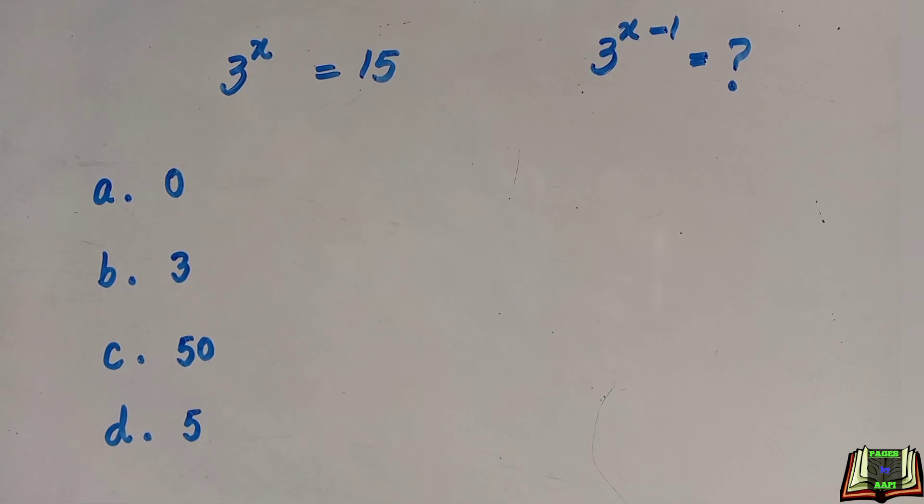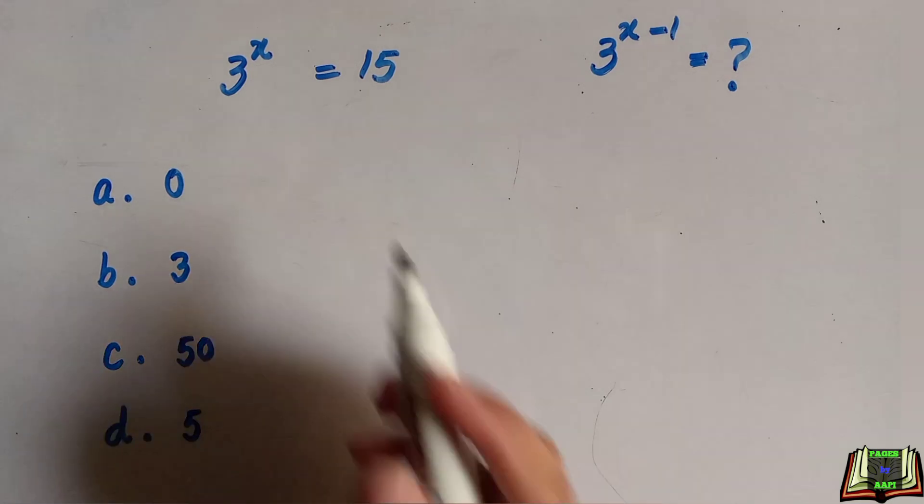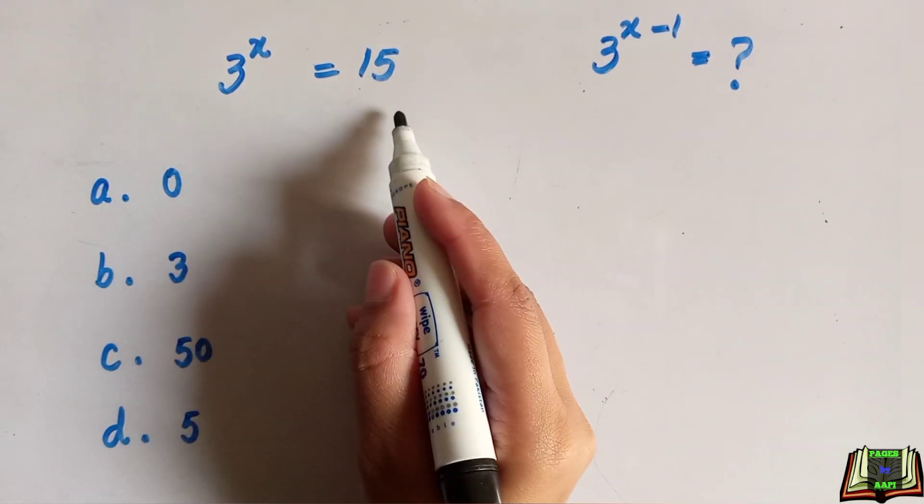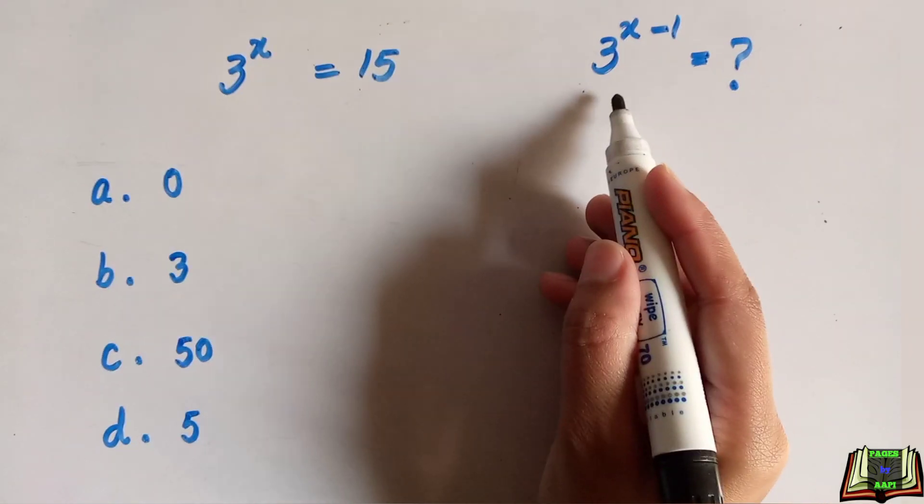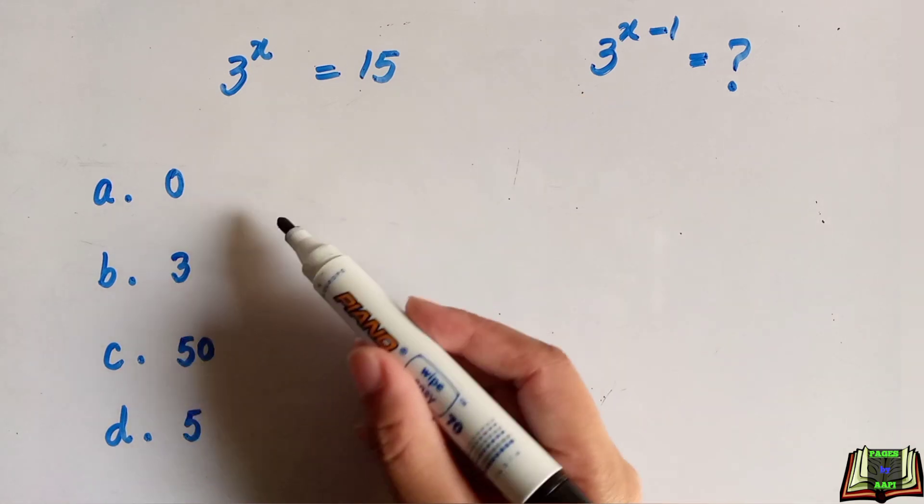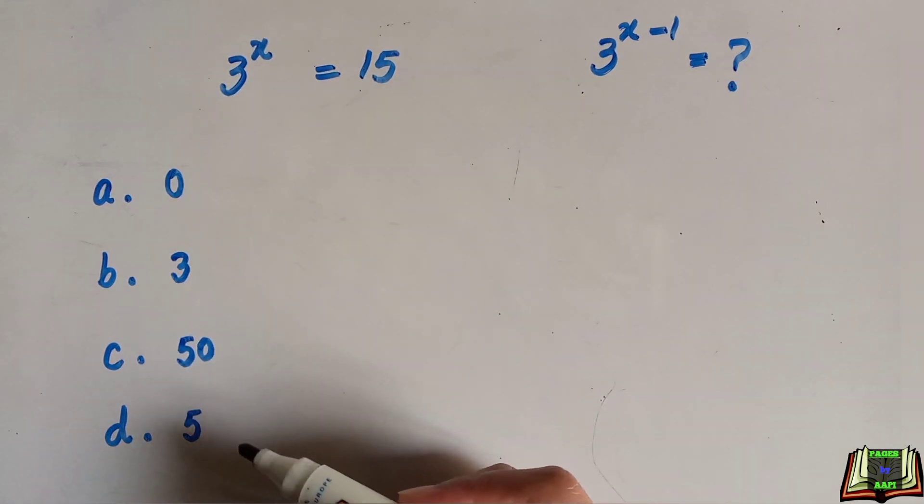Welcome to another exponential equation. Here is the question: If 3^x = 15, then we have to find 3^(x-1). And here are four options; we have to find the correct one.